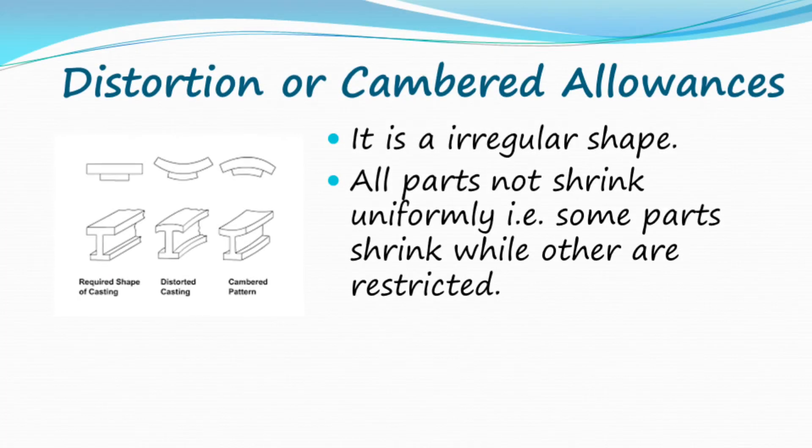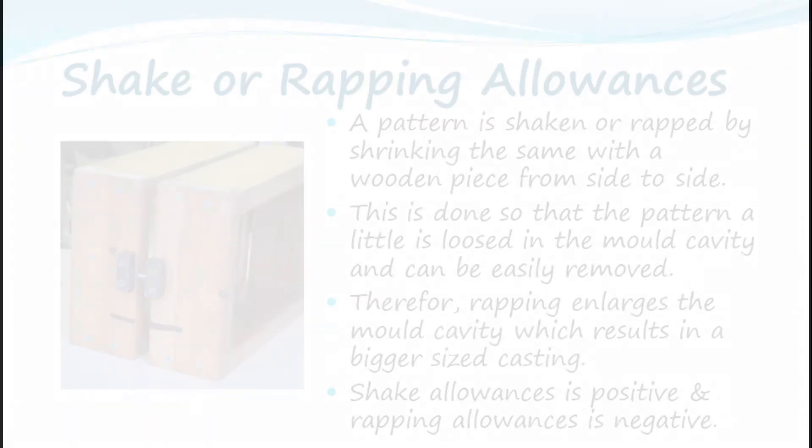Distortion or camber allowance: It applies to irregular shapes. All parts do not shrink uniformly — that is, some parts shrink while others are restricted.